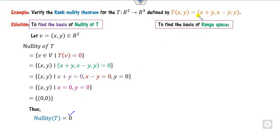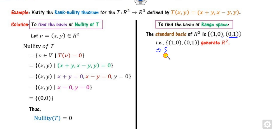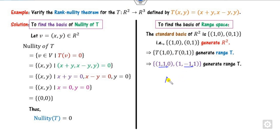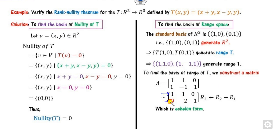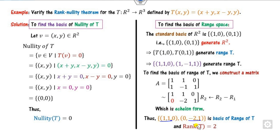Since the nullity is 0, we find the range. Starting from the standard basis of R², we apply the transformation to each basis vector to get T(1,0) and T(0,1). We construct matrix A from these images and convert to row echelon form by operating R2 minus R1. There are 2 non-zero rows, forming a basis. The rank is 2, and dimension of V (the co-domain R²) is 2. So rank + nullity = 2 + 0 = 2, which is satisfied.